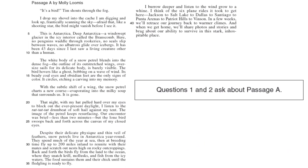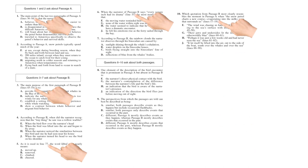Do passage A first — there are only two questions in passage A. Remember, one of the strategies could be Google summary, where you add one to three words to say what you just read. Here's my Google summary: I wrote 'bird' to describe the first paragraph, 'no life Antarctica fly' for when it talks about the bird flying, 'bird is gone,' 'memory of the bird,' 'behavior of the bird,' and then 'home' — they're comparing that behavior. There are five questions with line numbers, which is a good strategy for some passages. However, in the dual passage, I would do passage A then passage B, so it's diminishing returns to just do the ones with line numbers.